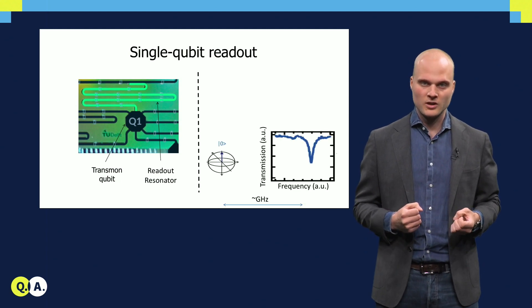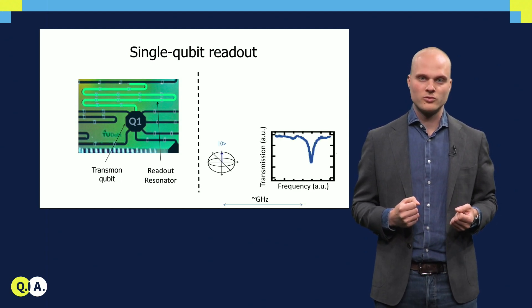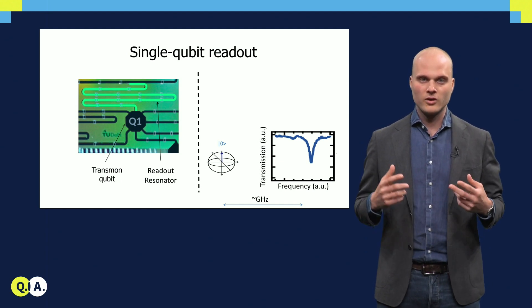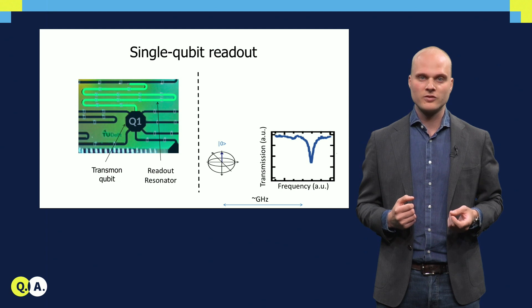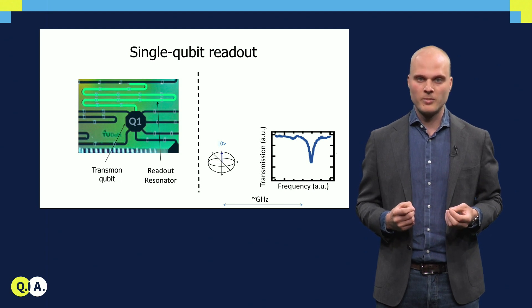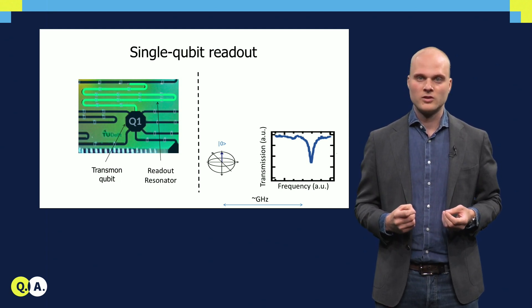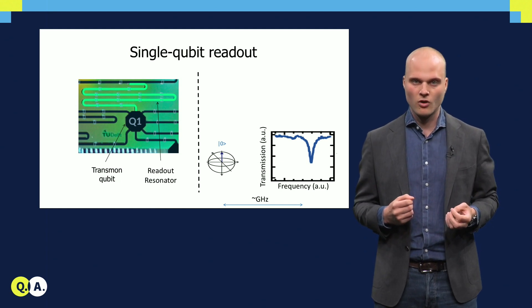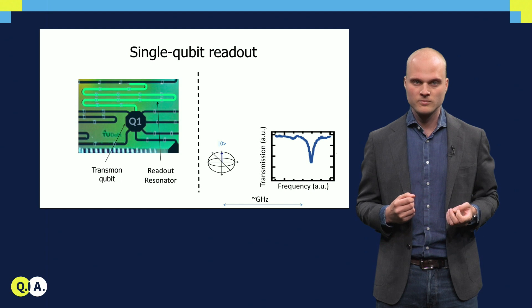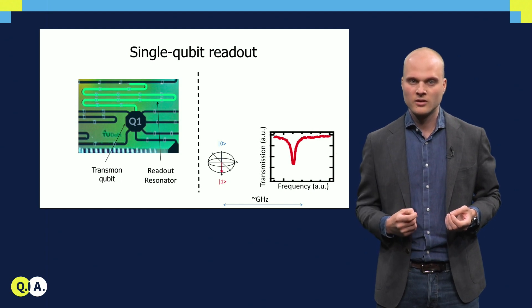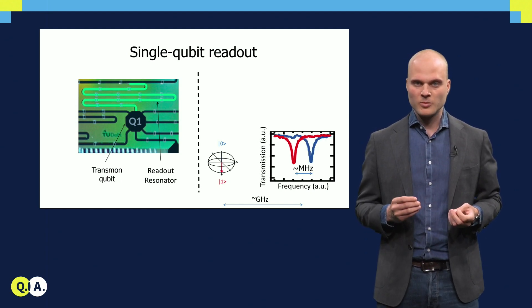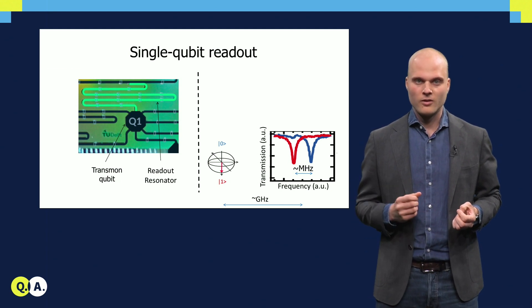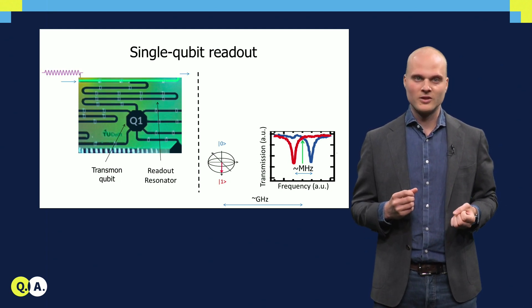The resonance frequency of the resonator is quite far away from the qubit transition frequency, on the order of gigahertz. However, due to the coupling there is a shift in the resonator's frequency depending on the qubit state. This shift is evidenced here by the measured resonator transmission dips of the qubit in the ground state and the excited state. This shift is typically on the order of a few megahertz, three orders of magnitude smaller than the detuning.